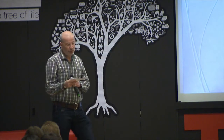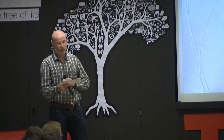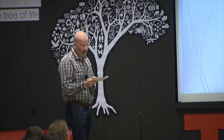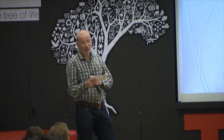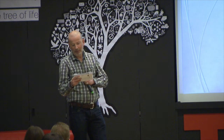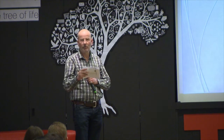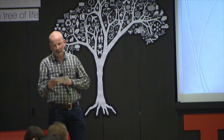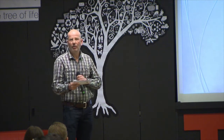Having studied evolutionary theory with textbooks, you should agree in four points with me. First, random mutation plays a major role in evolution. Second, organisms are completely genetically determined. Third, evolution proceeds long-acting, in innumerable gradual steps. Fourth, evolution is an externalistic concept — meaning natural selection is the dominating factor. Selection is external to the phenotype; it's not inside the phenotype. That's why evolutionary theory is often called the theory of selection.